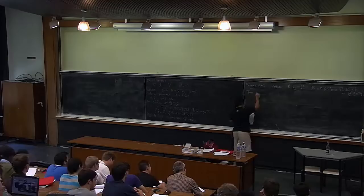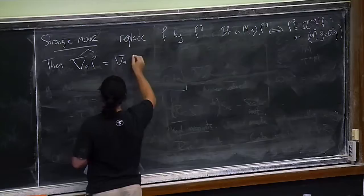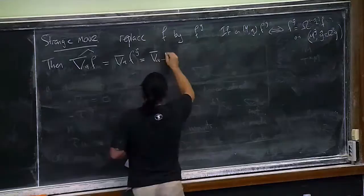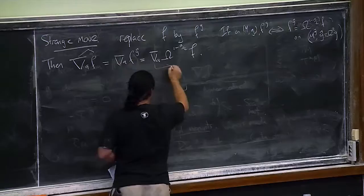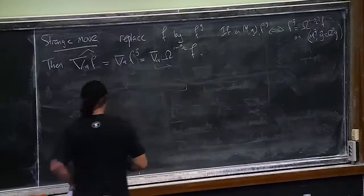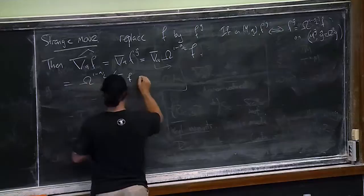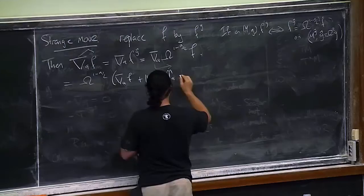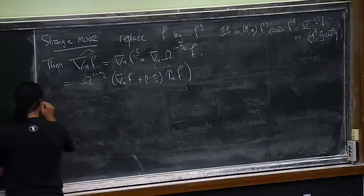So if you're on (M, g), you have f(g), and this will be somehow equivalent to f(G-hat) which equals omega^{(1-N)/2} times f on (M, G-hat) with G-hat = omega^2 G. We'll insist that f rescales that way. This looks like we've gone out of the realms of mathematics into a kind of panic, but let's do it anyway and see if it helps. So ∇_A^hat f, if we hat that, we take the Levi-Civita connection acting on this f(G-hat) = omega^{1/(N-2)} times f.